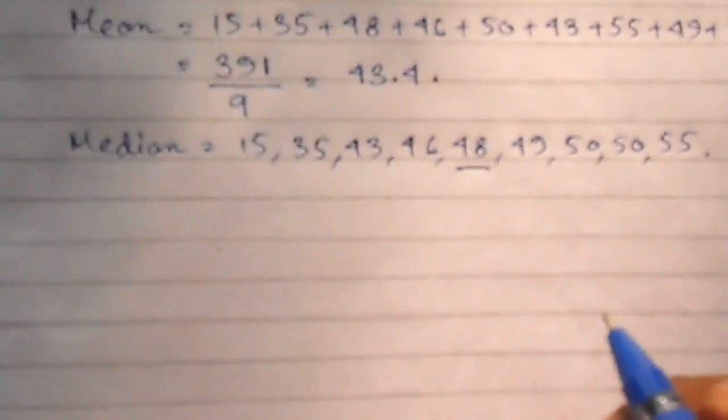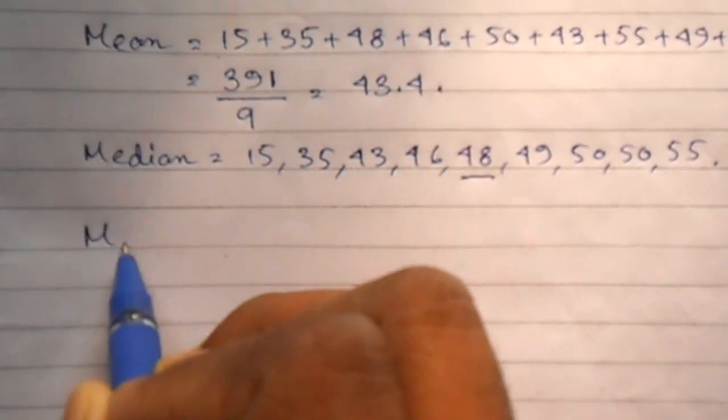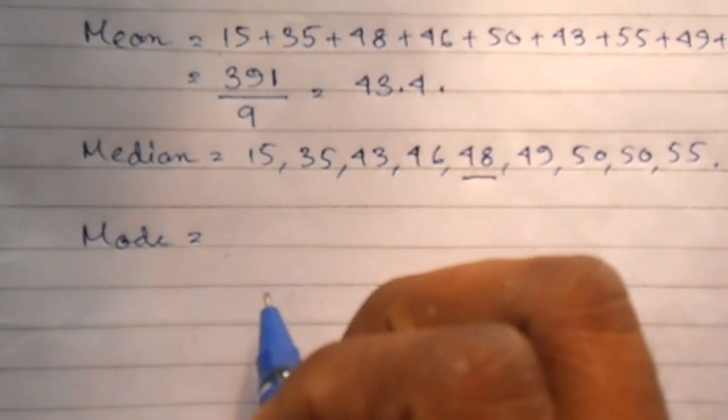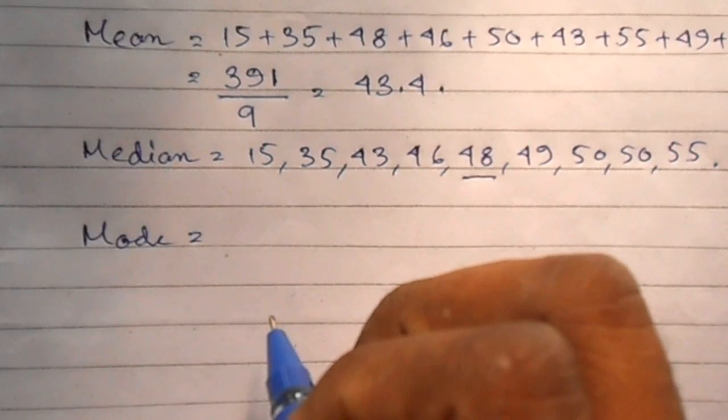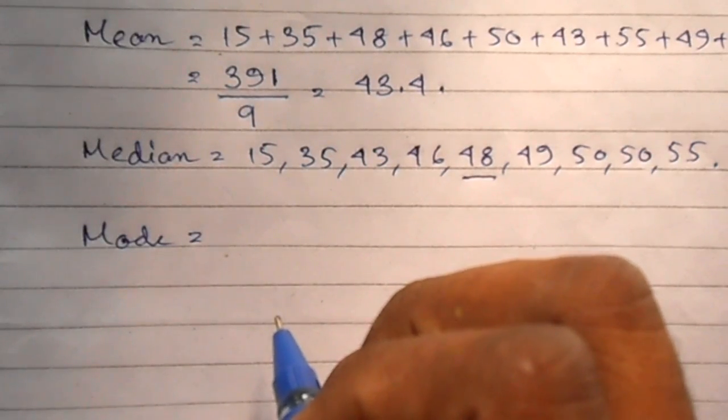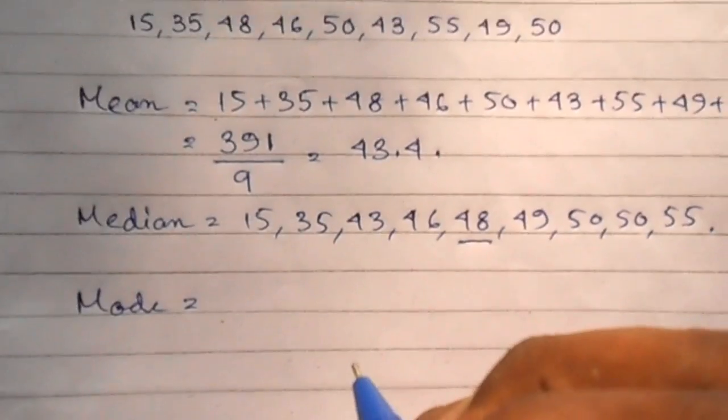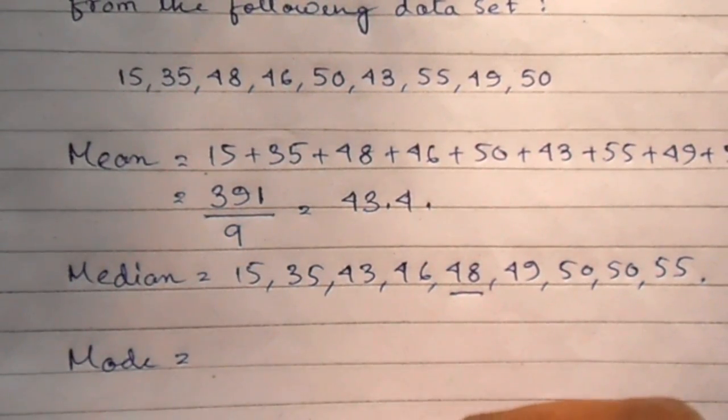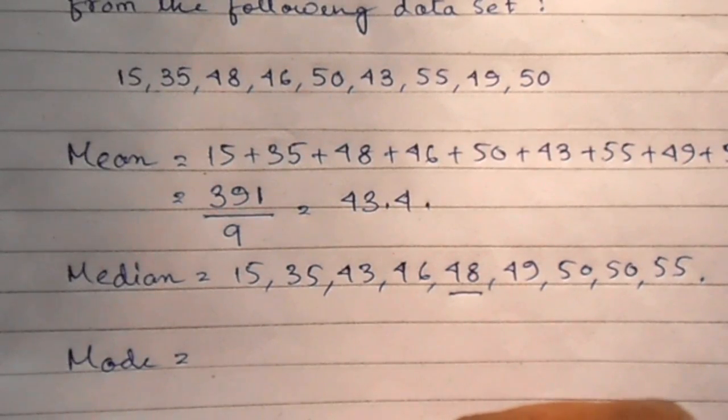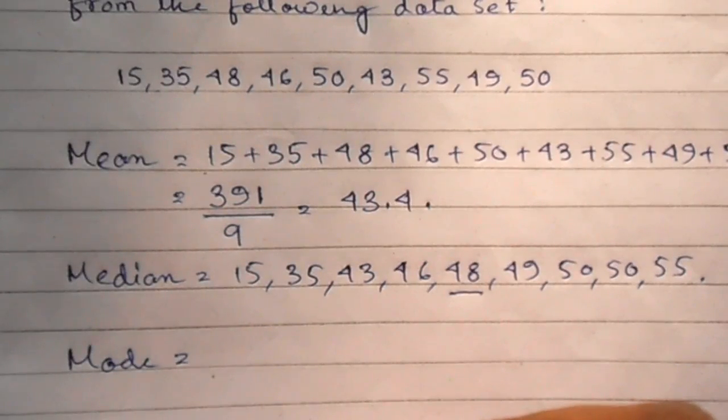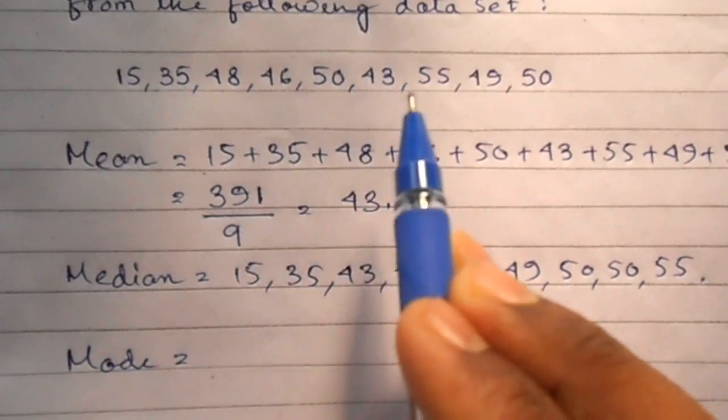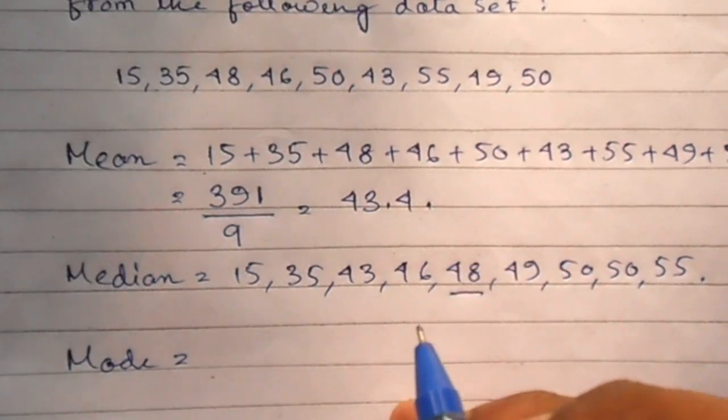Let's calculate mode. Mode is the number that appears most frequently in the data set. In our set of numbers, each number appears only once except 50, that appears twice. So the mode is 50.